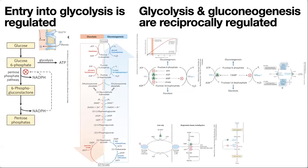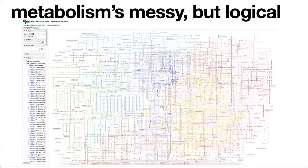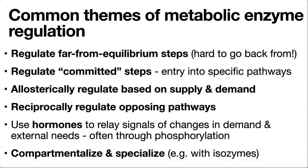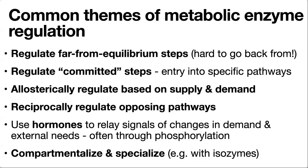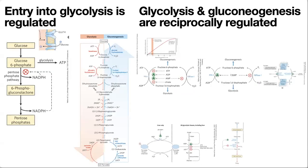It can seem really complicated, but the regulation is logical — just like all of metabolism is logical. Let's focus on that logic as we look at specific examples. Let's identify where we see these different logical strategies at play in the regulation of glycolysis and gluconeogenesis.